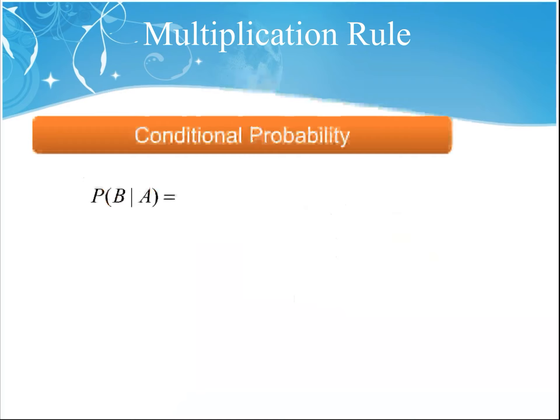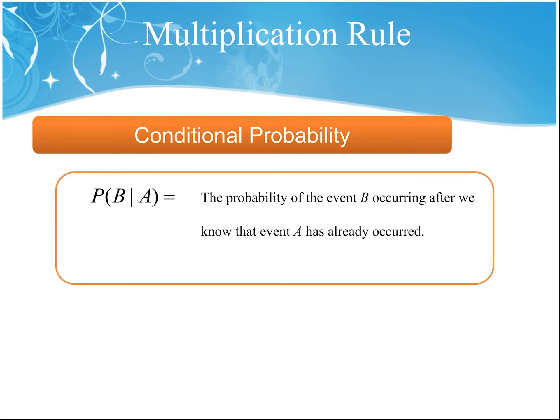Here's what's going on — this is something called conditional probability. We write it as P of B given A, with a vertical line, meaning the probability of event B happening given that A already happened — the probability of event B occurring after we know that A has already occurred.